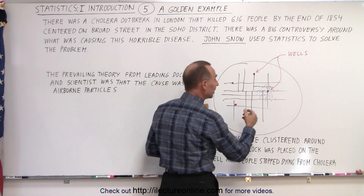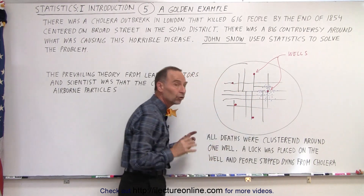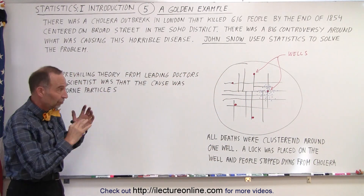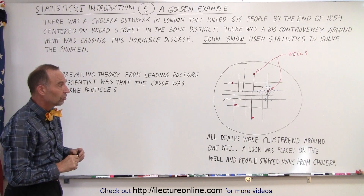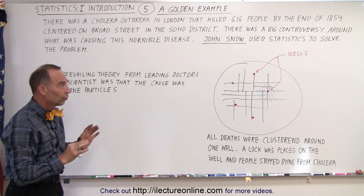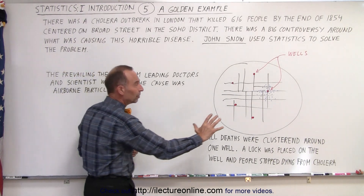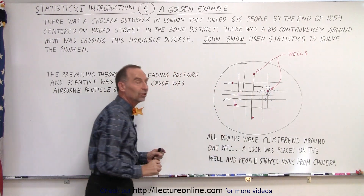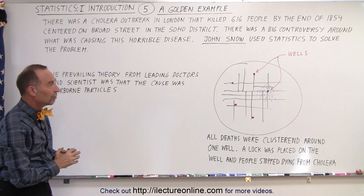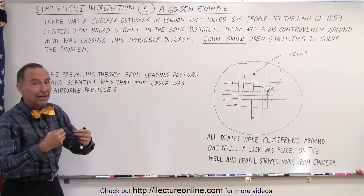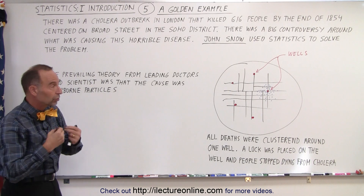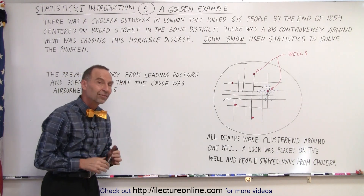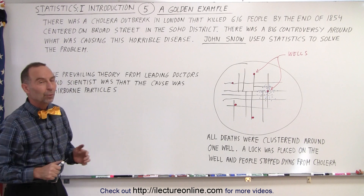They went ahead and listened to him — they put a lock on the well, and sure enough, people stopped getting cholera and stopped dying from that horrible disease. Notice that a simple, clear representation of the situation in a very nice scatter diagram allowed him to prove, without actually knowing the real cause, just the connection to that water well that caused the deaths, and the problem was solved.